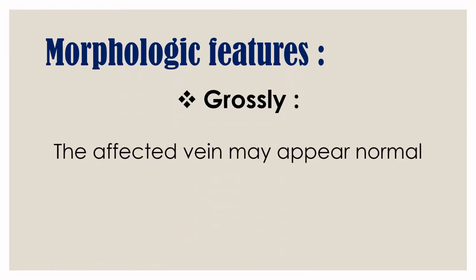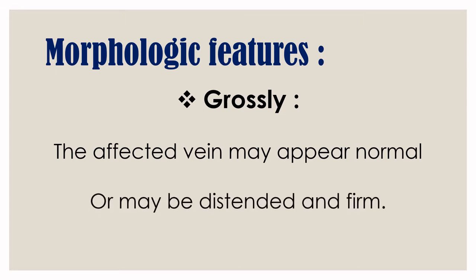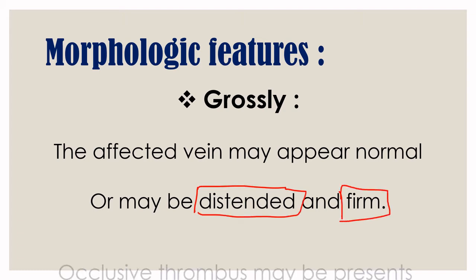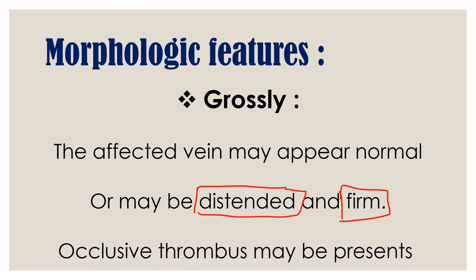Now, morphologic features. Grossly, when we examine the affected vein, it can appear normal or distended and firm. We can see slight swelling. Occlusive thrombosis may be present — the thrombosis causes obstruction and blood flow is not proper, leading to swelling.